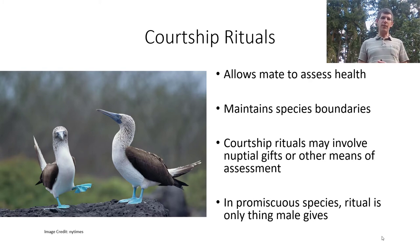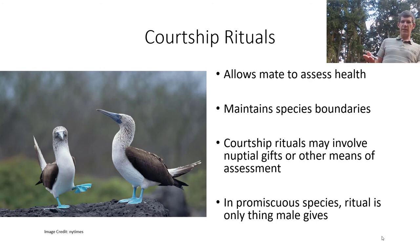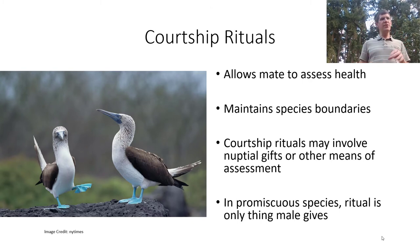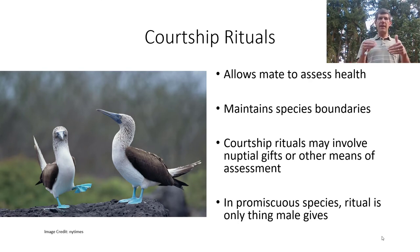Courtship rituals can involve appearance and other means of assessment. In a promiscuous species — one that does not form long-term pair bonds — the ritual is the only thing the male provides. The female observes the ritual, assesses how well the male performs it, mates, and leaves. The male contributes only the ritual and sperm, which don't cost much.